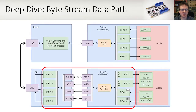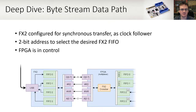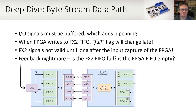Next up is the FX2 to FPGA crossbar. This is a massively complex area, but the user doesn't have to know anything about it — it just works thanks to Whitequark. Have a peek in fx2_crossbar.py for three screens of explanation from Whitequark. The FX2 has four FIFOs built into it and the FPGA has up to four FIFOs to mirror these depending on the applet you're running. The crossbar coordinates transfers between these two FIFOs, but it can only operate on a point-to-point basis. The FX2 is configured for synchronous transfer, giving us better throughput, and to accept a clock from the FPGA. There is also a two-bit address to choose from the FX2's internal FIFO. The FPGA is entirely in control of this link. You can't use combinational logic on a bus, which means that I/O must be buffered using a register on a global clock. This adds pipelining, which means that data is in flight or being passed along a chain. The pipelining complicates feedback and adds a delay, which means that when the FPGA writes to an FX2 FIFO, the full flag will appear to be asserted a number of cycles late due to that pipeline.